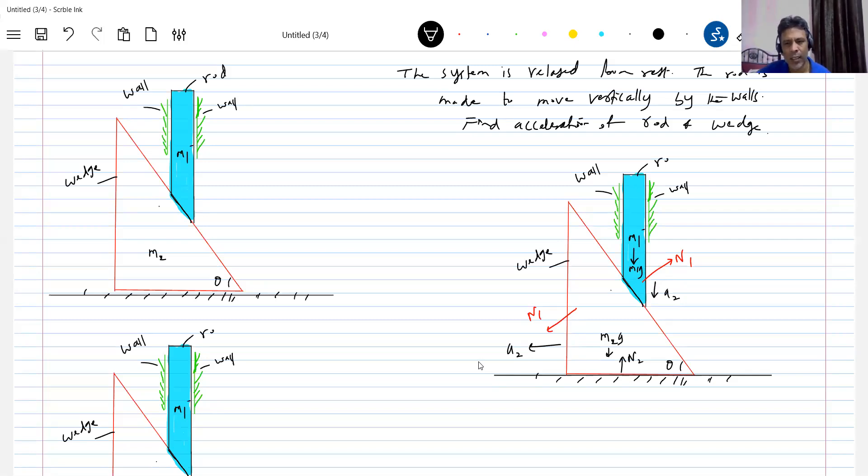Okay, these are the things. Let's write equation of motion. First, like for the rod, for the wedge, N1 sin theta equal to M2 A2. For the rod, M1 G minus N1 cos theta should go to M1 A1. How many unknowns are there? N1, A2, A1. We need one more equation.